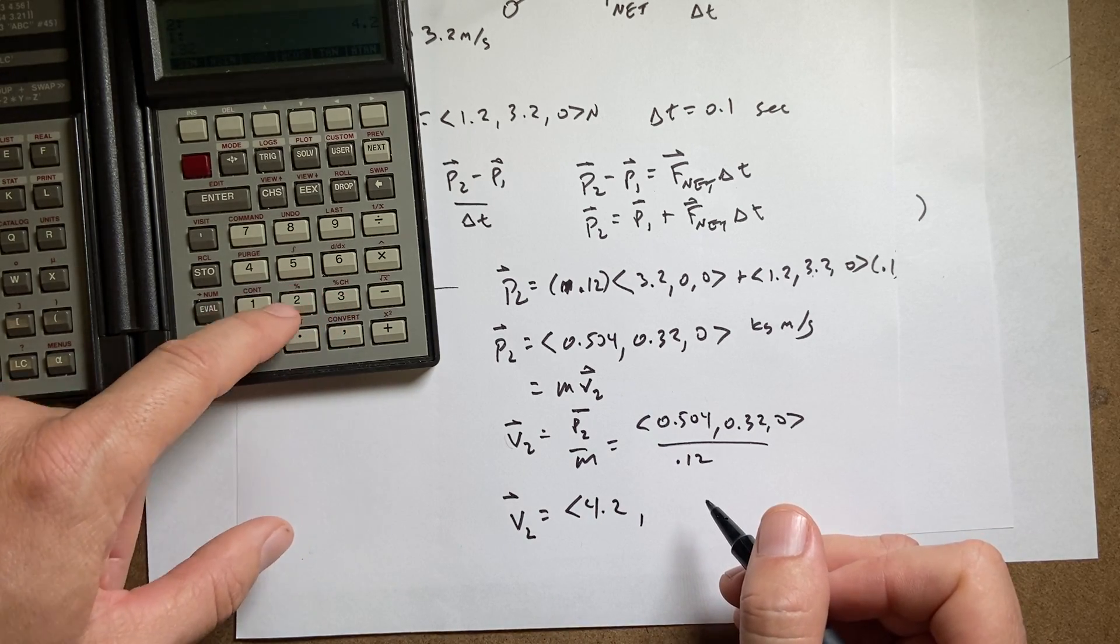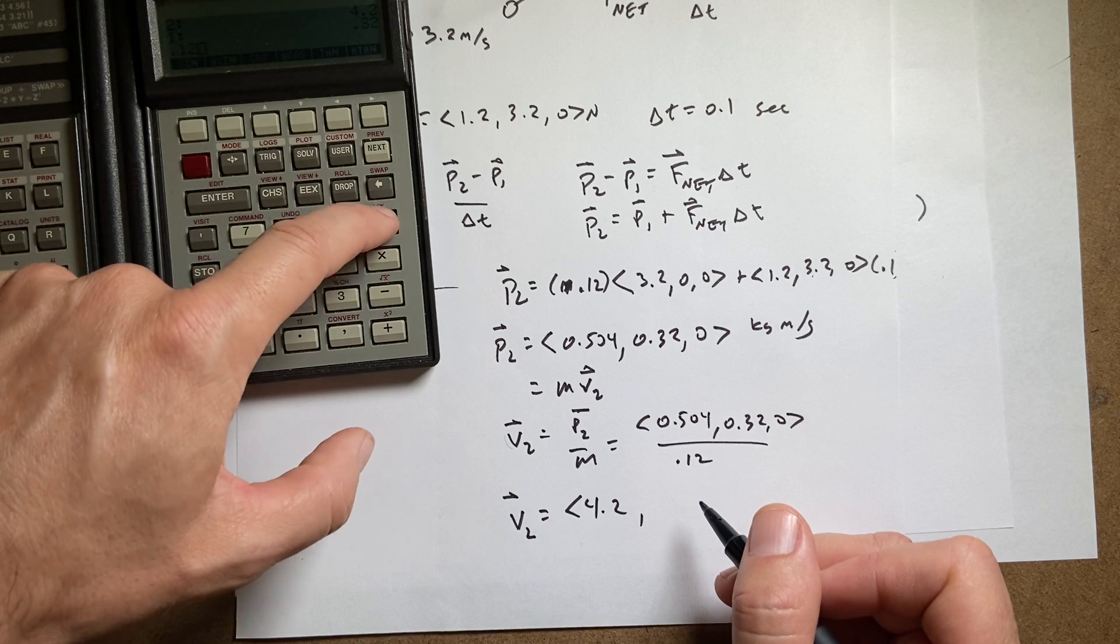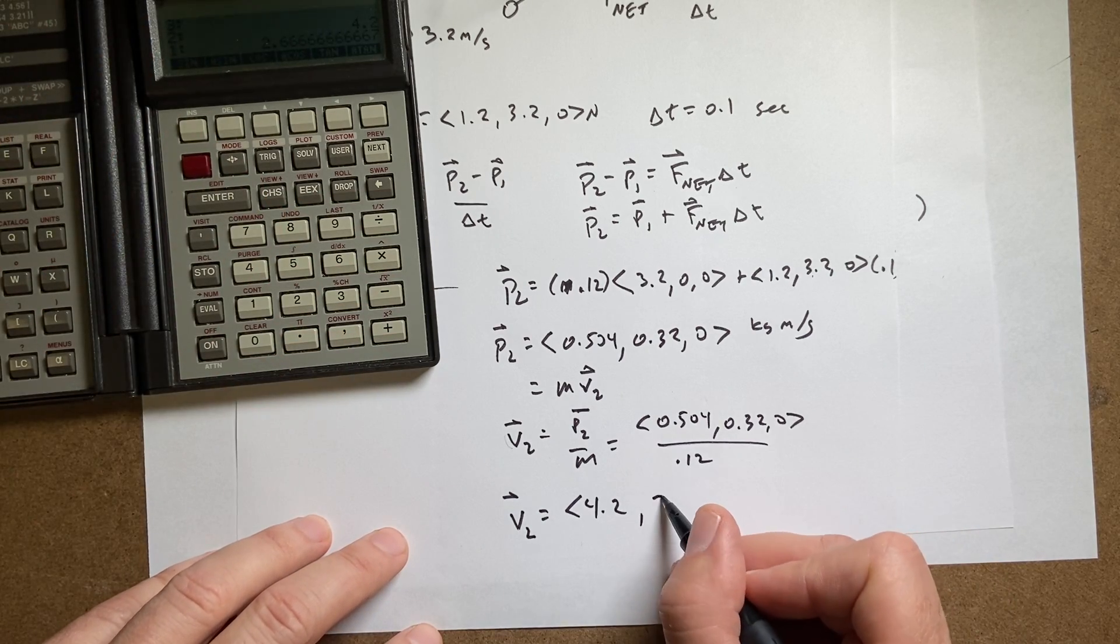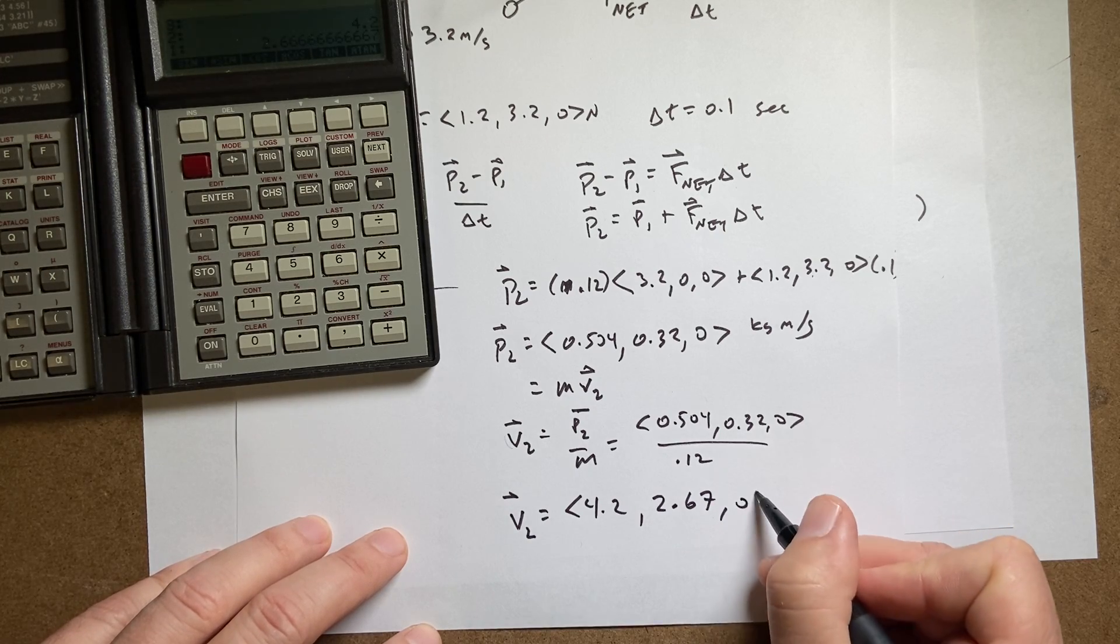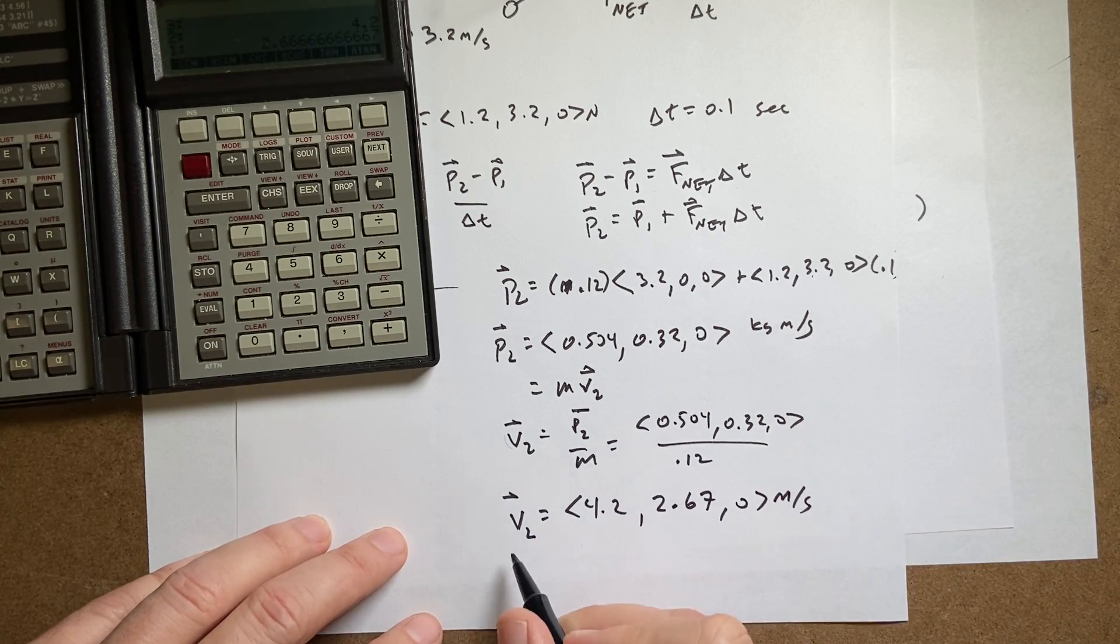And I say 0.32, enter, 0.12 divided by. And yes, this is my RPN calculator, just in case you're asking. I'm just going to write this as 2.67 and then zero meters per second. And that's the answer.